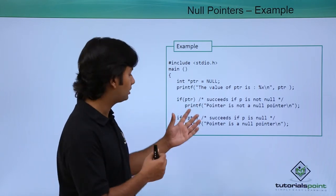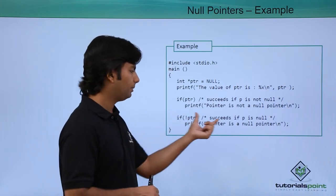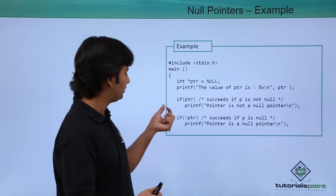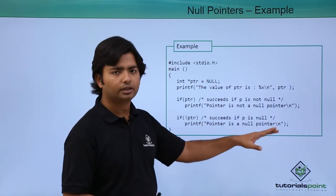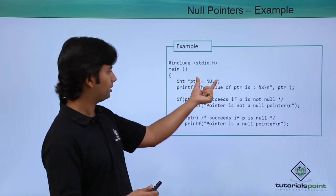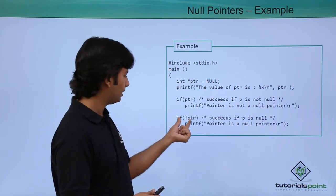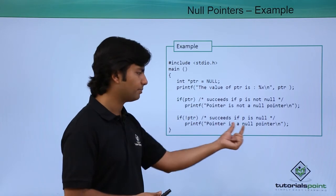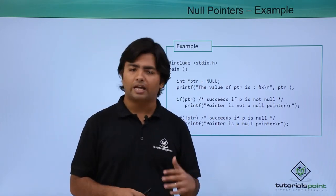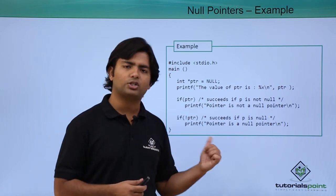If memory is successfully allocated at runtime and an address is assigned to the pointer, it will no longer be a null pointer. We check 'if not ptr' before executing further code — if the pointer is null, we do not execute. In this scenario, since the pointer is null, the null pointer statement will be printed. We will cover dynamic memory allocation in coming videos.